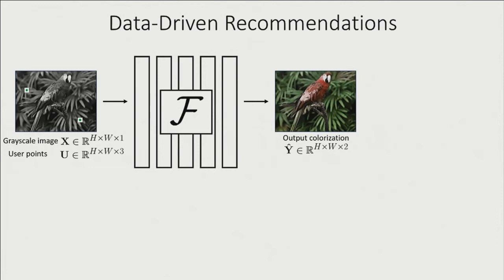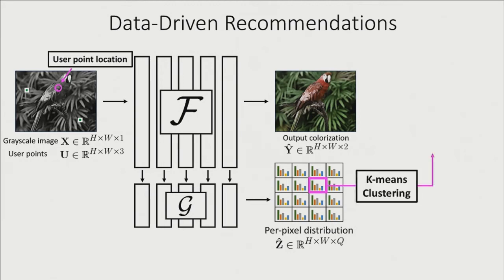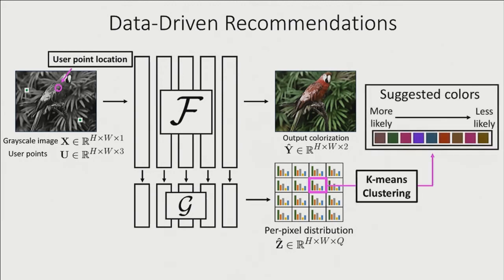Our main system predicts a single colorization for every pixel. On the side, we add a side network to predict a distribution over pixel values. When the user selects a particular point, we find the corresponding color histogram, run a mode-seeking algorithm based on k-means, and then present the most popular cluster centers to the user.